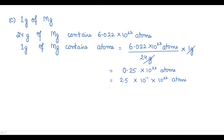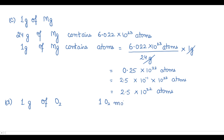That gives 2.5 × 10²² atoms for magnesium. The last option D is one gram of O₂. Don't confuse O₂ — it's not an atom, it's a molecule. One O₂ molecule equals 2 atoms.